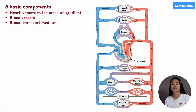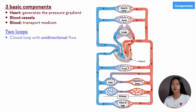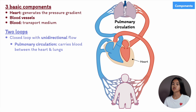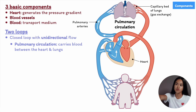The human circulatory system is a closed loop with only one direction of flow — it's unidirectional — and it consists of two loops known as the pulmonary circulation and systemic circulation. Let's simplify the diagram and break down the two circuits. The pulmonary circulation is a small loop that carries blood between the heart and lungs. Blood is pumped out of the heart via the pulmonary artery, goes through the lungs, and is returned to the heart.